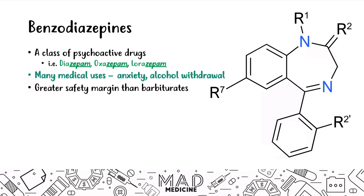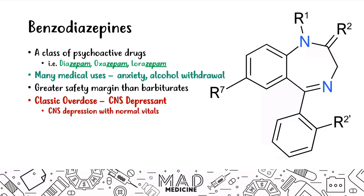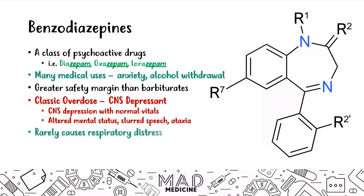For Step 1, the classic benzo overdose presentation involves CNS depression with normal vitals but altered mental status. The patient may have slurred speech or ataxia, but vitals are normal. Because benzos have a larger safety margin, you are rarely going to see respiratory distress — unlike barbiturates, where respiratory distress is a positive finding.